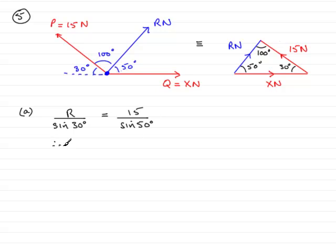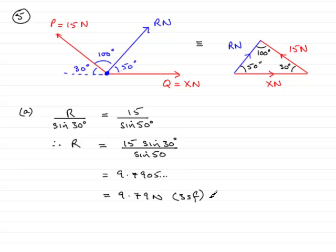And all we need to do is just rearrange that by multiplying both sides by sine of 30, and you've got 15 sine of 30 over sine of 50. And working that out on a calculator, you get 9.7905 and so on, which when rounded, say to three significant figures, is 9.79 newtons. And don't forget to put 3SF there. All right, so that's part a.